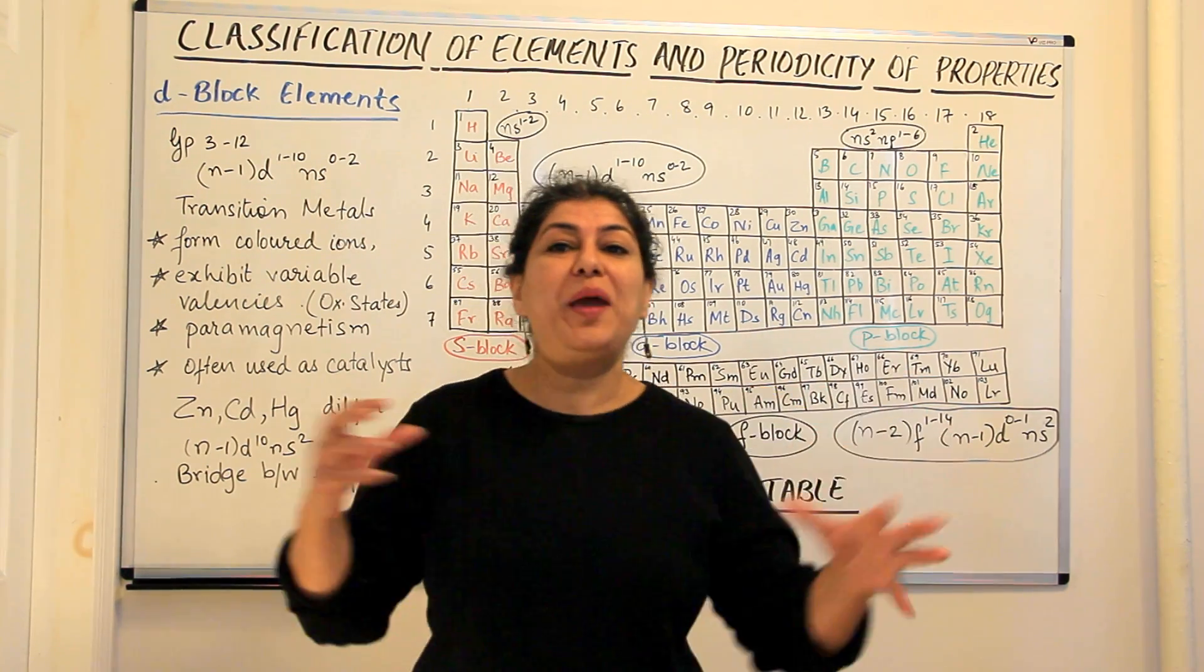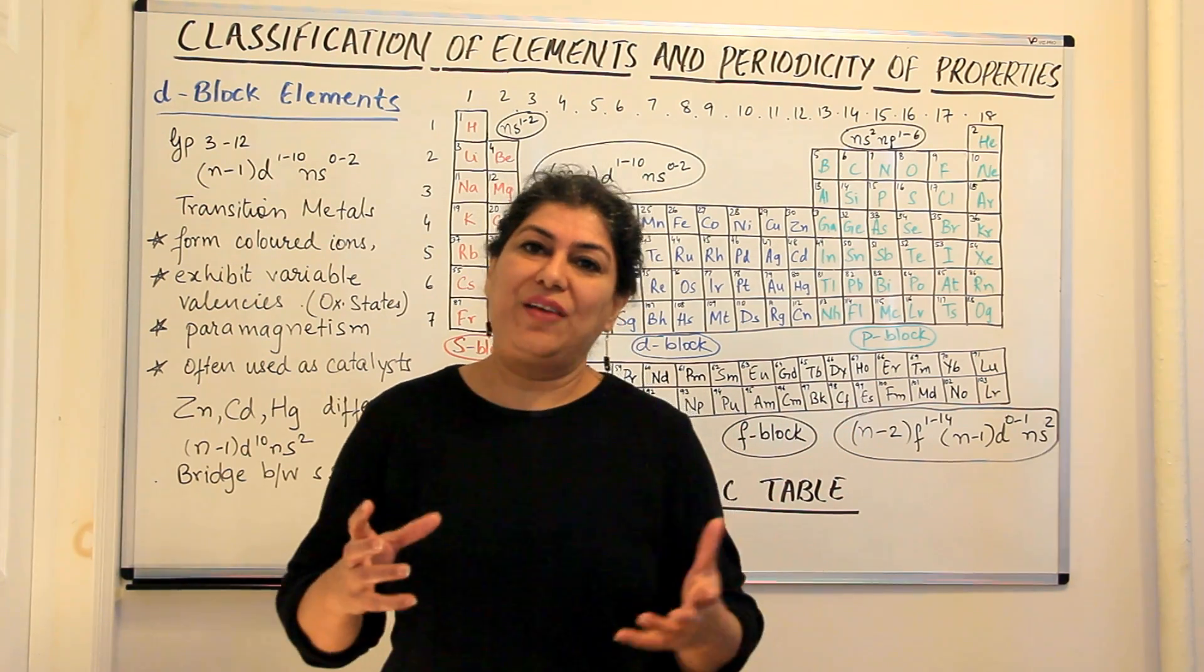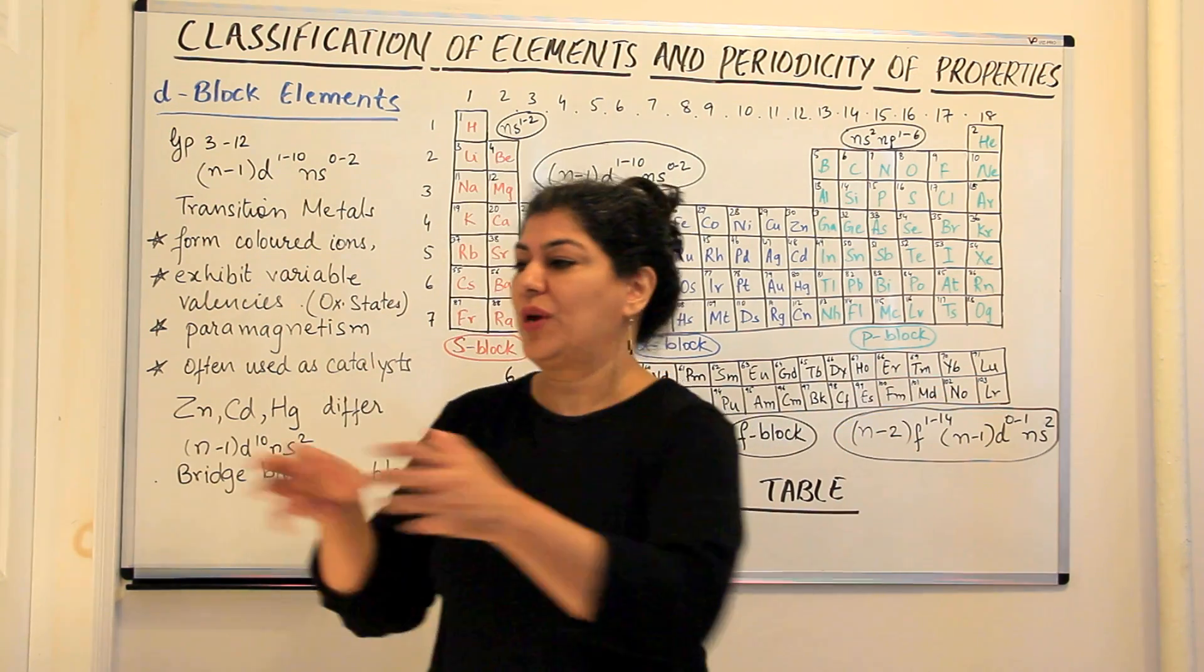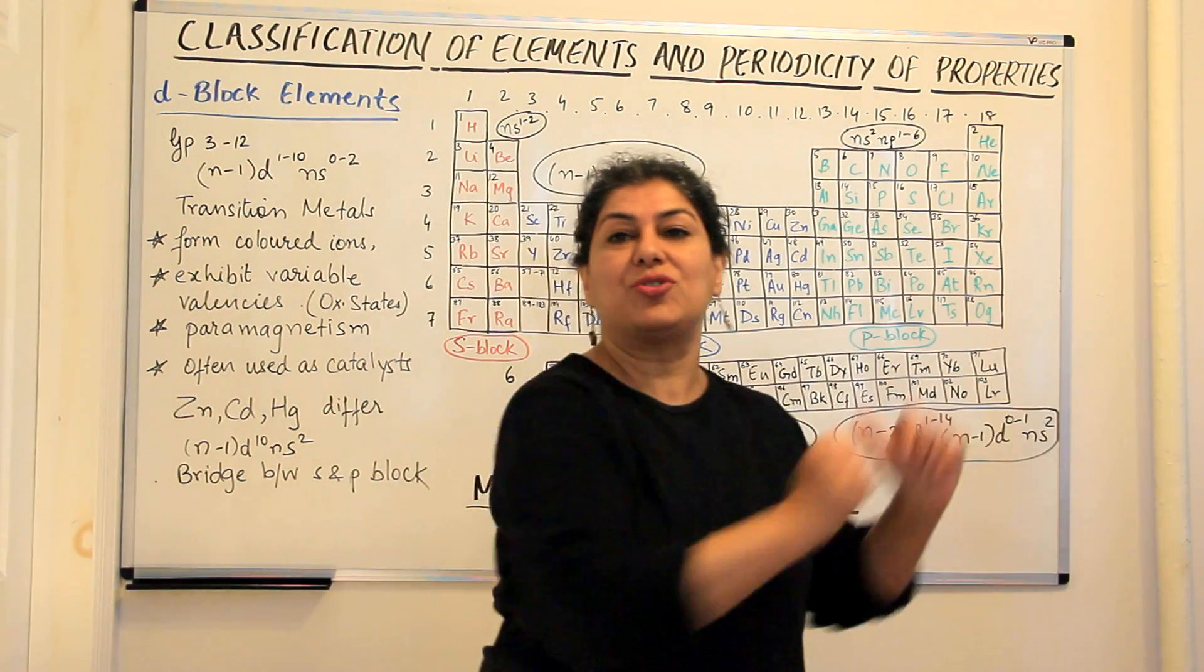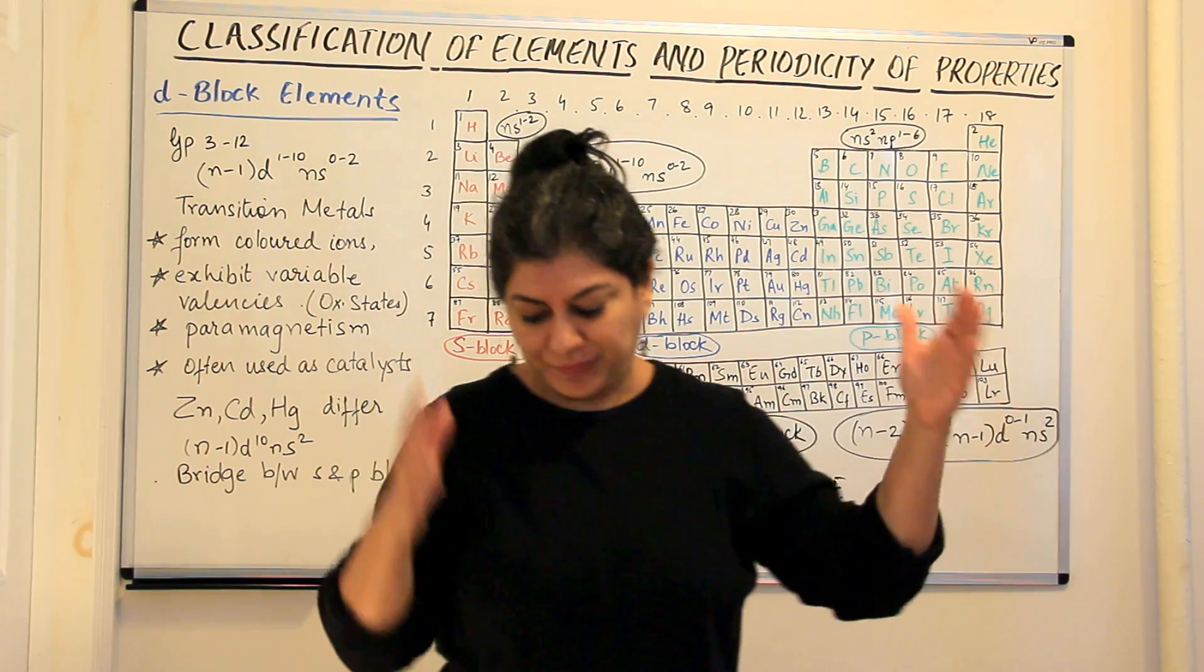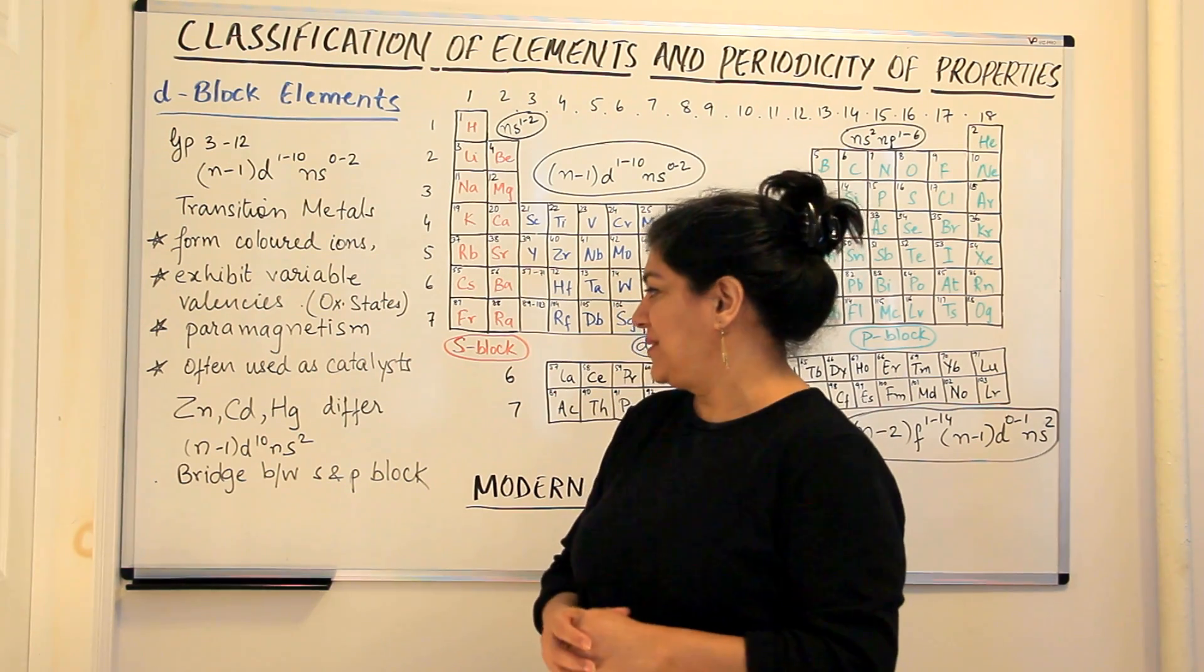These metals are often used as catalysts and one reason for that could be that they show variable oxidation states. They have so many ways, they can combine in different ways and therefore that makes it easy for them to hop into any reaction. I can help this one also, I can do this also, I can do that oxidation state and help that reaction. So these metals are often used as catalysts.